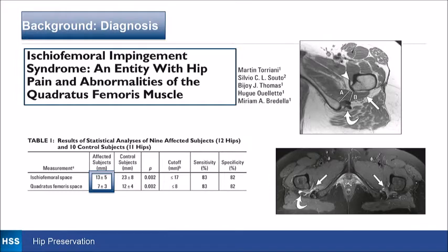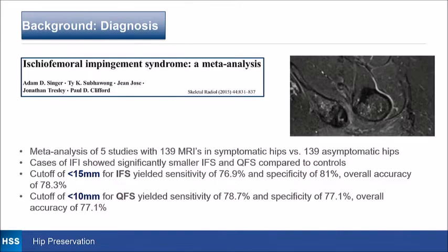Toriani and colleagues first defined the MRI findings in 2009, where they showed that affected subjects versus control subjects had a decreased ischial femoral space — the line between the lesser trochanter and the lateral aspects of the ischium — as well as decreased room for the quadratus femoris. They also described edema in the quadratus femoris. Control subjects were similar to our control subjects, so the numbers seem fairly consistent.